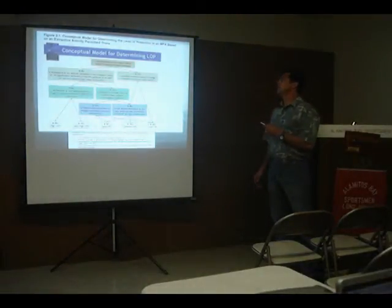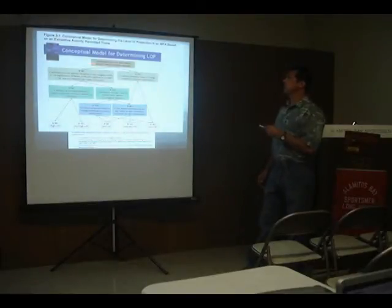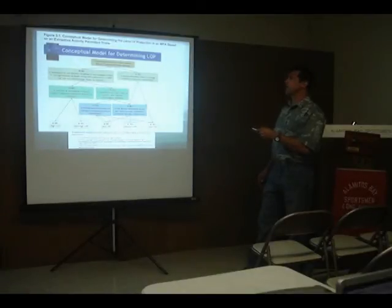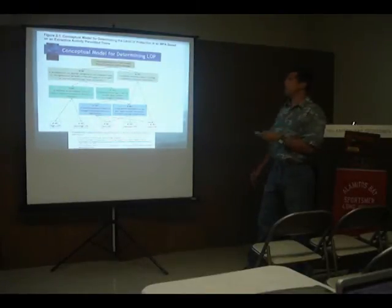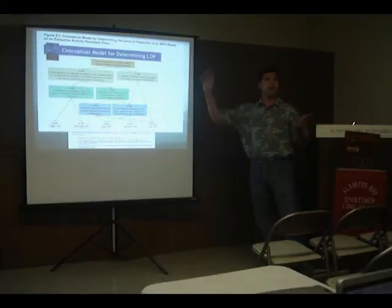Next slide. Conceptual model for determining level of protection. Let's use a scallop and a yellowtail. For yellowtail: does the proposed activity alter habitat directly? Taking yellowtail — the answer is no, it doesn't do physical habitat damage. Is the abundance of any species, target or non-target, likely to be significantly different in the MPA relative to an SMR? No — yellowtail come and go. If removal of species is likely to impact community structure directly or indirectly? Yellowtail come and go; they have no lasting effect. The answer is no — you get a high level of protection for taking yellowtail.